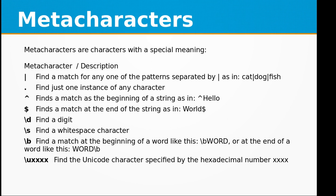Meta characters are characters with special meaning. The pipe sign finds a match for any one of the patterns separated by it, as in cat|dog|fish. A dot finds just one instance of any character. The caret (^) finds a match at the beginning of a string. The dollar sign ($) finds a match at the end of a string. \d finds a digit, \s finds a whitespace character, and \b finds a match at the beginning or end of a word, like \bword or word\b. \uxxxx finds the Unicode character specified by the hexadecimal number xxxx.